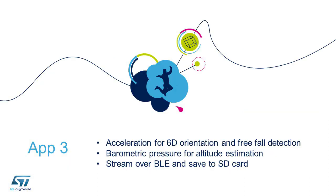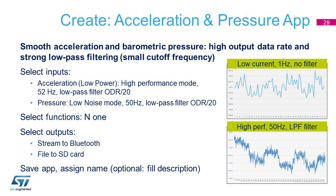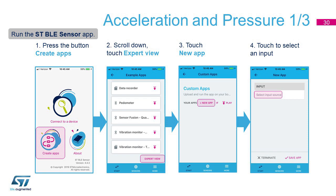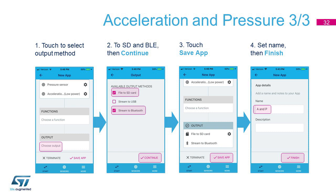Example number 3 will show other features and options. In the first part of this example, we will use the Pressure Sensor. Let's create a new app as done in Examples 1 and 2. Let's select the Pressure Sensor and the Low Power Accelerometer. Pressure Sensor properties need to be set to low noise, 50 Hz ODR, and ODR 20 low-pass filter. As outputs, let's choose File to SD Card and Stream to Bluetooth at the same time. Let's name this example ANP.